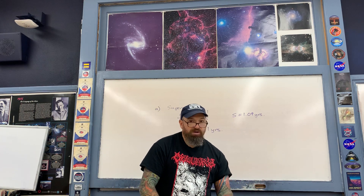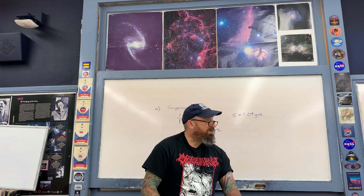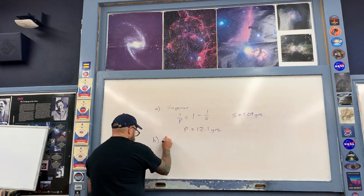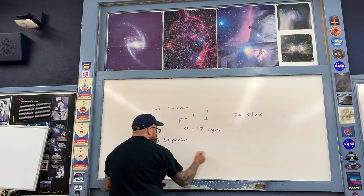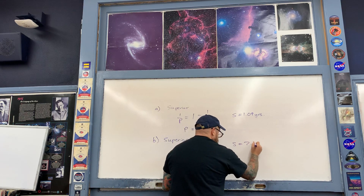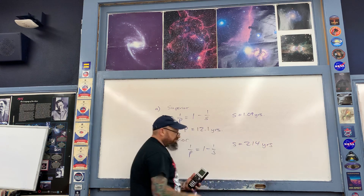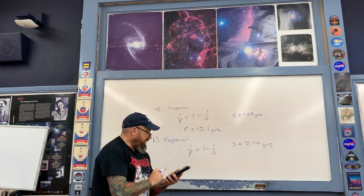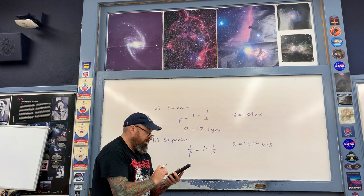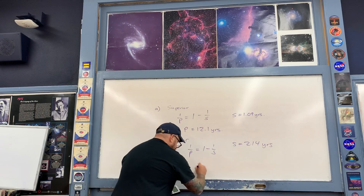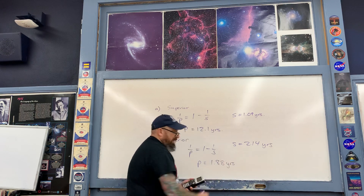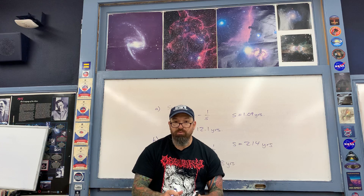I'll also apply this method in part B. The synodic period of Mars is 2.14 years; Mars is also a superior planet. So I use the same formula, with S equal to 2.14 years, and just plug into the expression: 1 minus 1 divided by 2.14. Then I take the reciprocal of that and end up with the sidereal period P of Mars being a little bit less than two years — about 1.88 years. That concludes this portion of the problem.